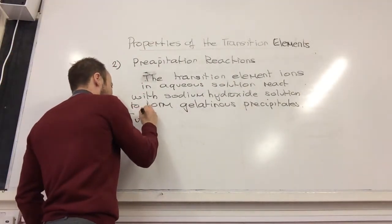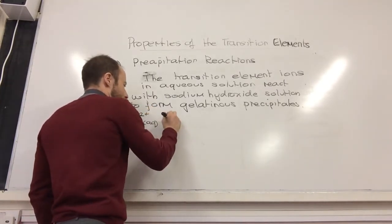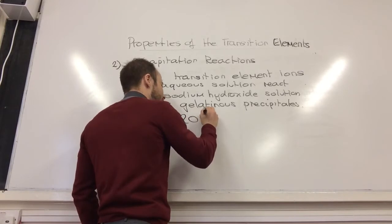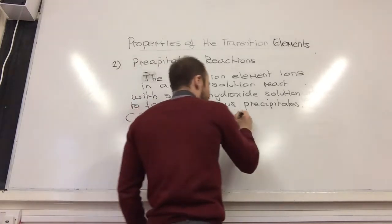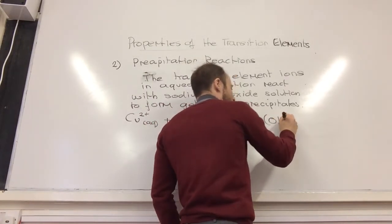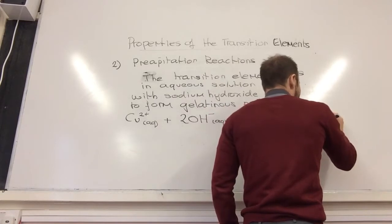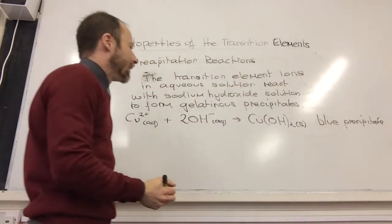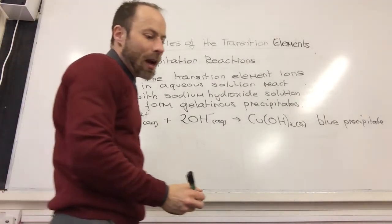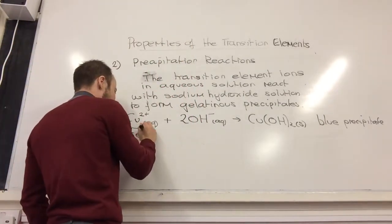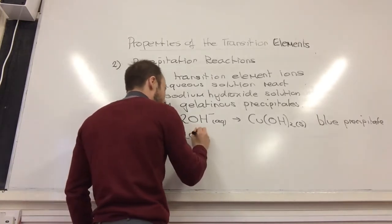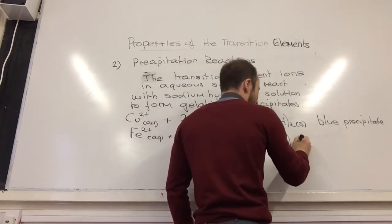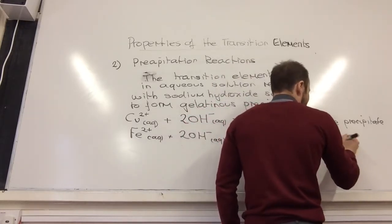You need to know four. Copper two plus aqueous - these are going to be ionic equations - plus two hydroxide ions in solution gives me Cu(OH)2 solid, that is a blue precipitate. So you need to know the equations and the color it goes. The next one, Fe2+ aqueous plus two hydroxide ions gives Fe(OH)2 solid. That is a green precipitate.